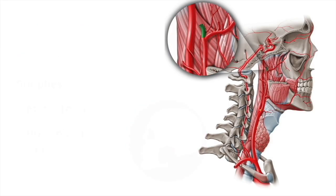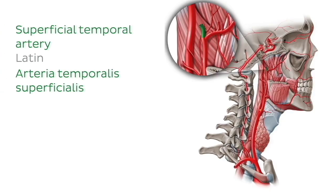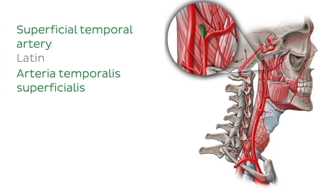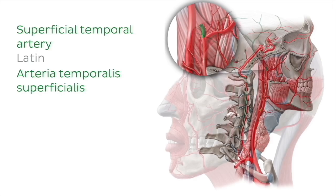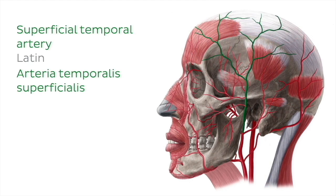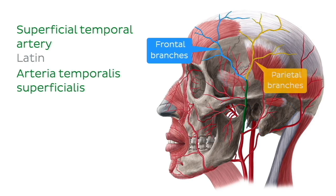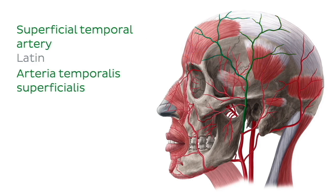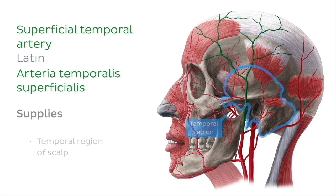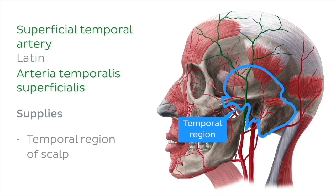The other terminal branch is the superficial temporal artery. We can see the beginning of this artery highlighted here in green. This artery ascends superficially along the temporal bone and terminates by dividing into the frontal and parietal branches. Because of its superficial location, the pulse of this artery can be easily palpated. It supplies the temporal region of the scalp, as seen in this image of the lateral view of the face and neck.